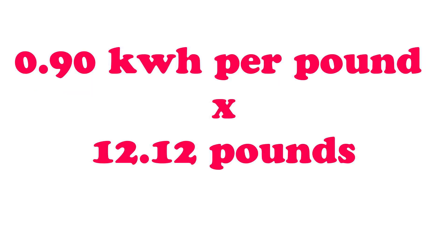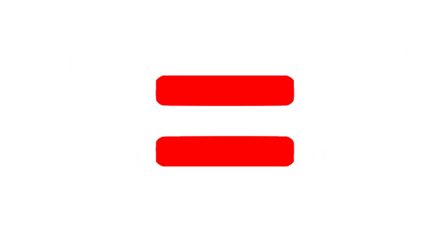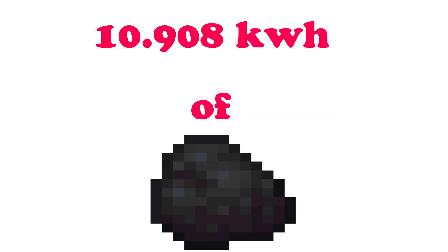So we take that 0.90 kilowatt hours and multiply it by 12.12 pounds — that's how much we got — and we end up getting 10.908 kilowatt hours of coal. That's a pretty decent amount.